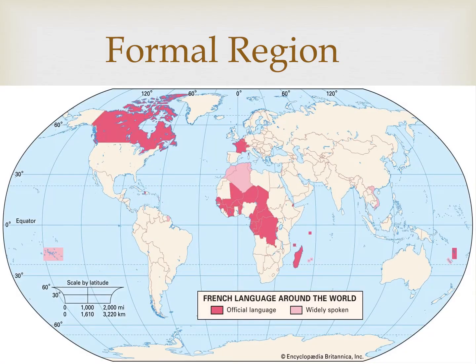A formal cultural region could be where there's uniformity of language or religion. This map looks at the Francophone world, or the region where the dominant language is French. But this map helps us understand a common misconception about formal regions: just because there is a degree of uniformity doesn't mean that it needs to be 100% homogenous. Does everyone within those French-speaking areas speak French? No. But there's a high degree of homogeneity, which defines it as part of the formal region.